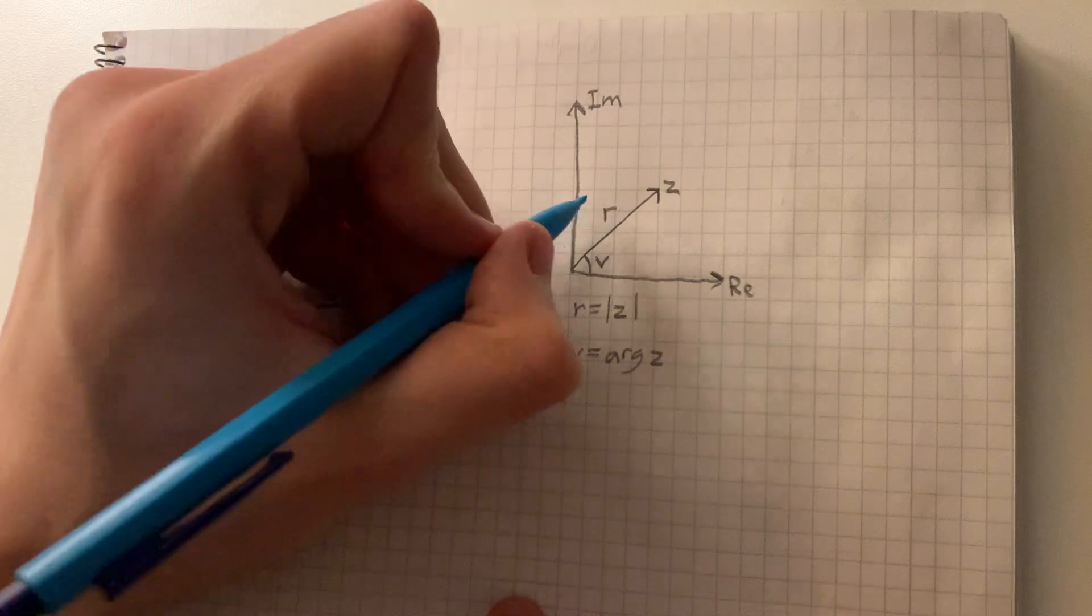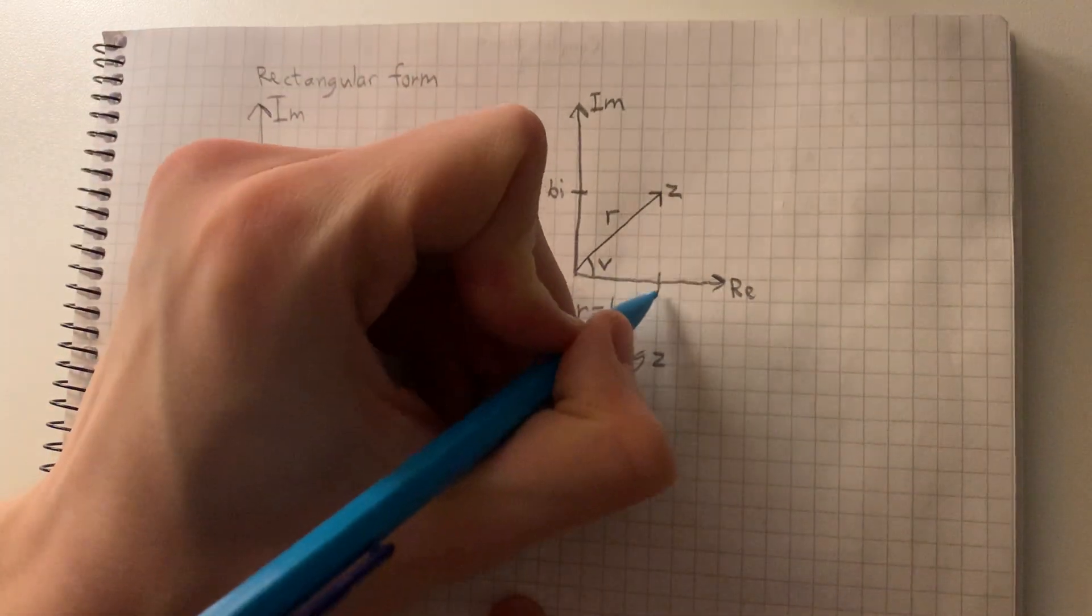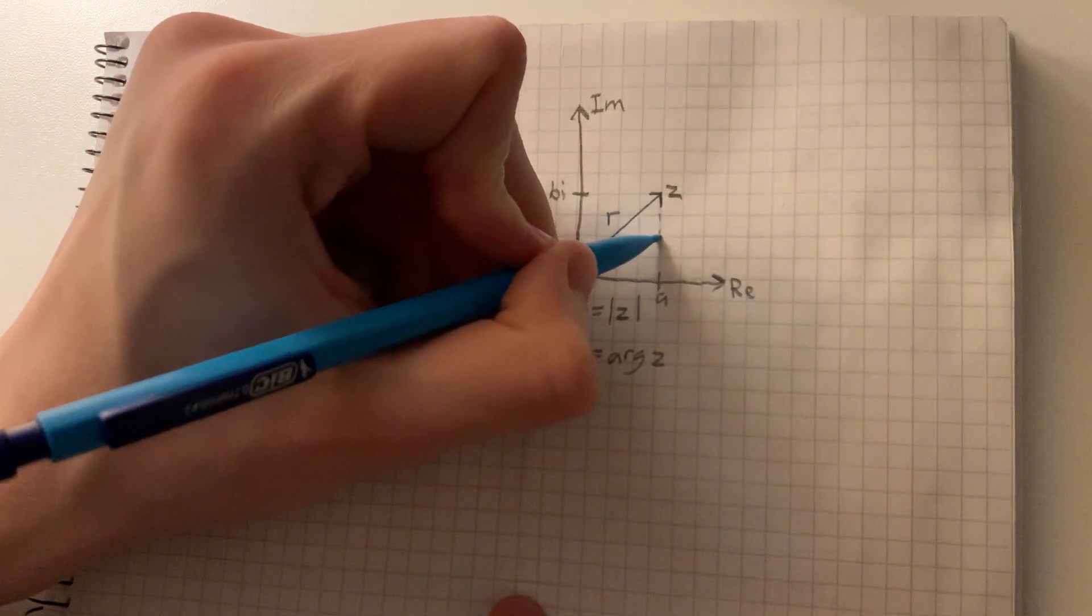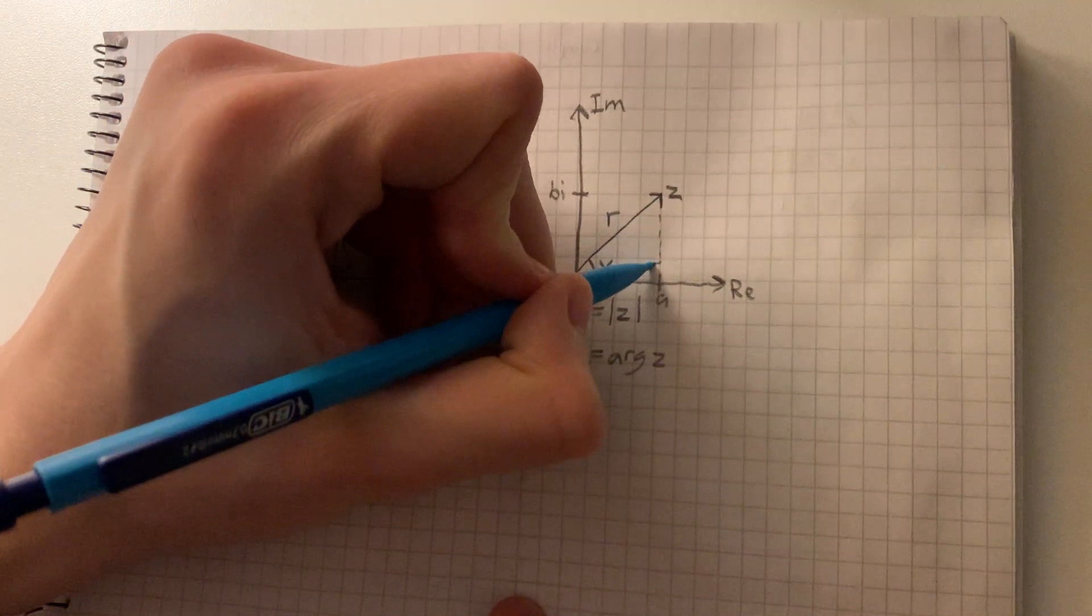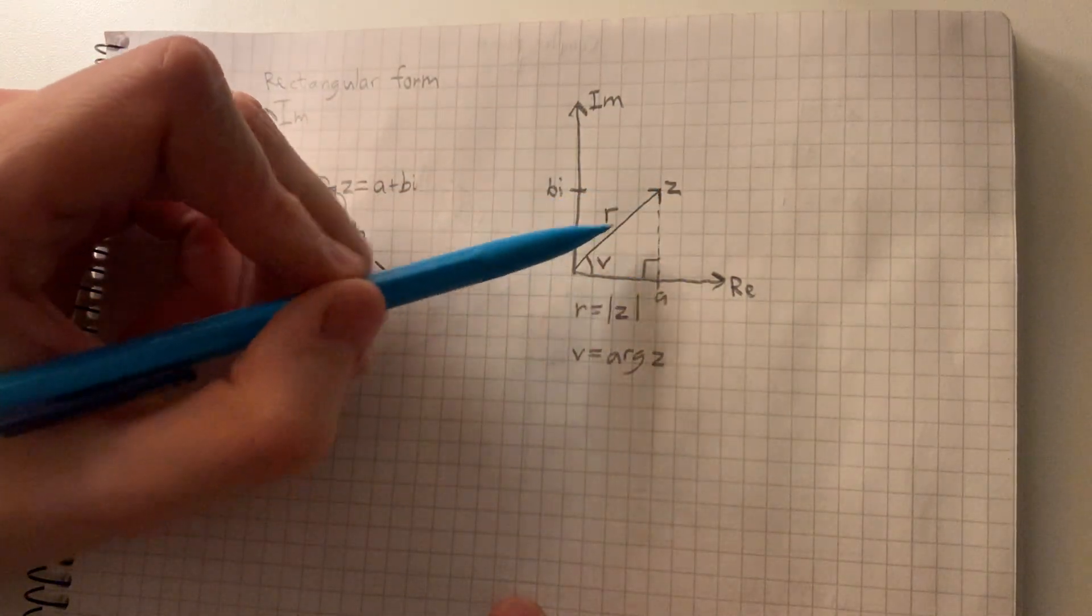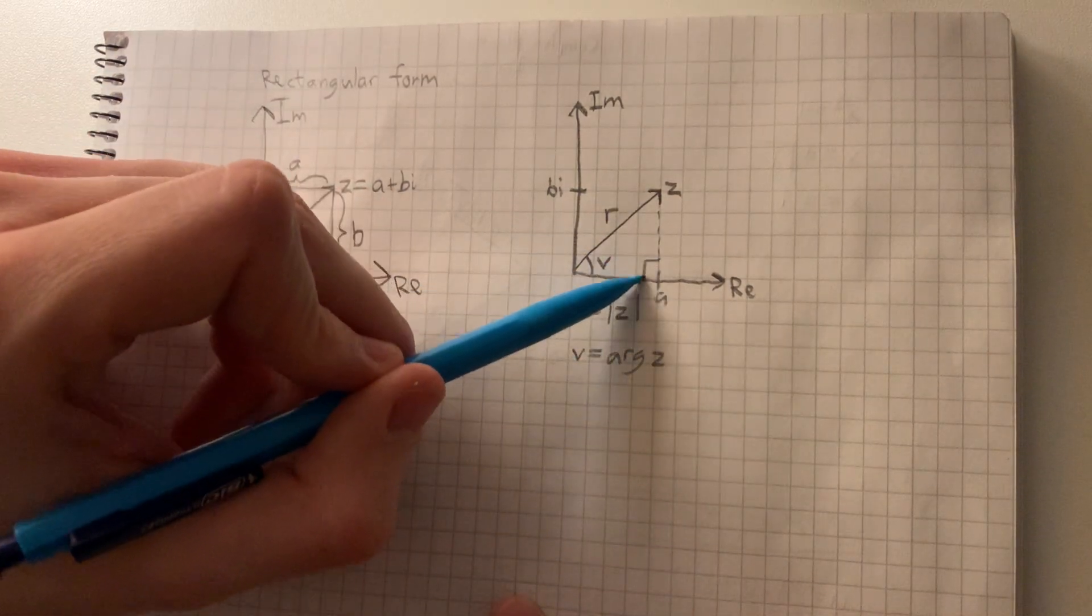We now see if this is bi and this is a, we get a triangle with one side being 90 degrees.